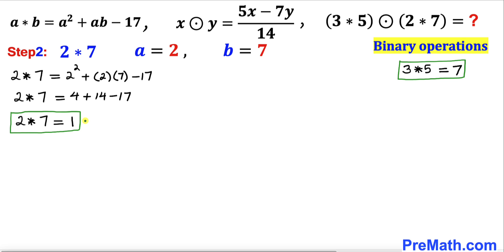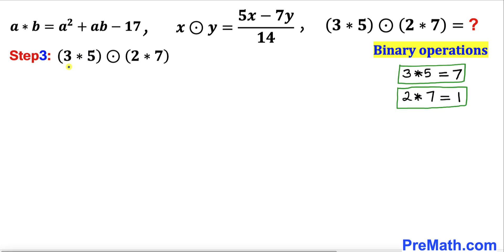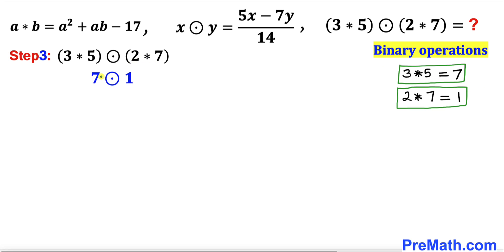So 2★7 turns out to be 1. Now in the final step we find (3★5) ⊙ (2★7). We already know 3★5 = 7 and 2★7 = 1, so this becomes 7⊙1.